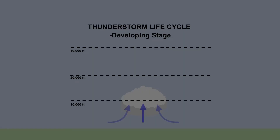In order for a thunderstorm to form, there needs to be unstable atmospheric conditions, a lifting force, and high moisture levels. With these three conditions, a thunderstorm can be created. Generally, the lifting force leading to a thunderstorm is caused by rising air due to terrain, rising air due to unequal warming of the earth's surface, and rising air due to warm or cold fronts colliding with each other.